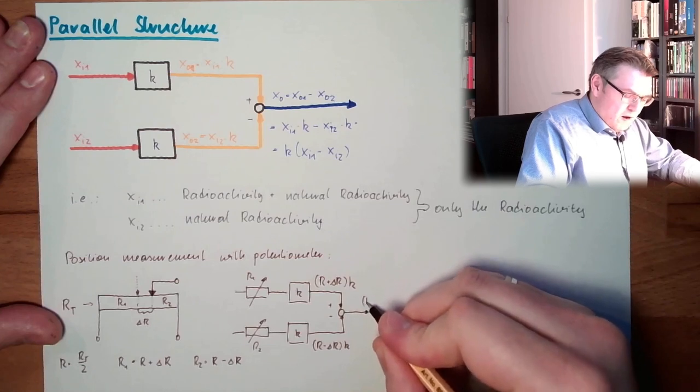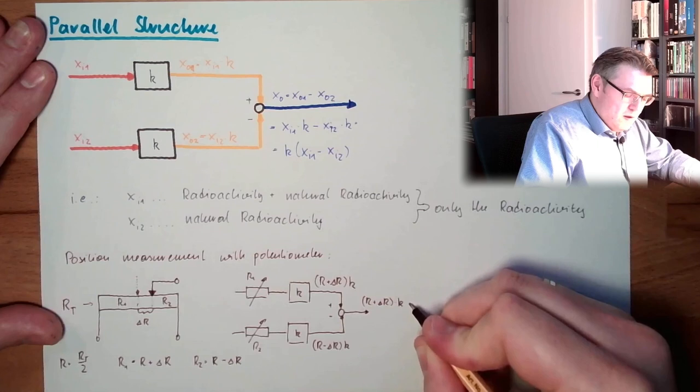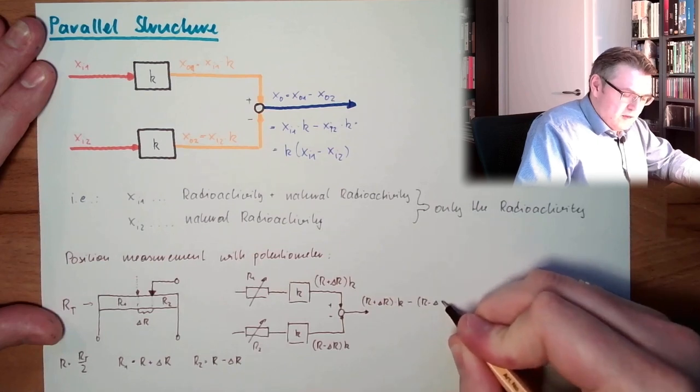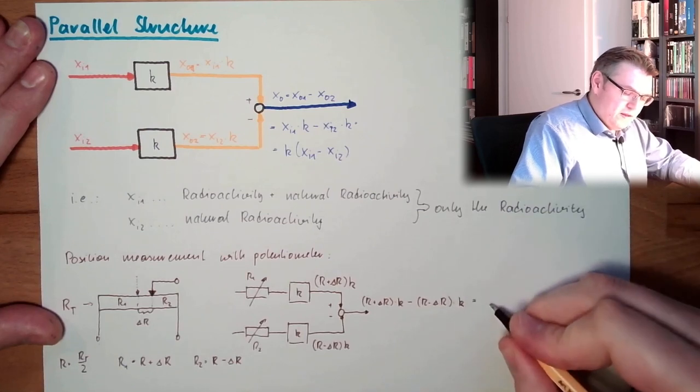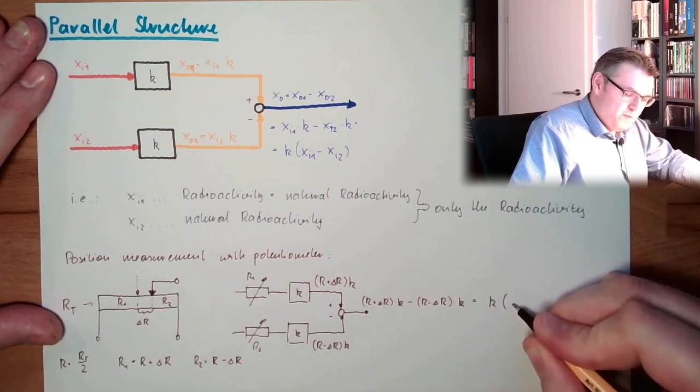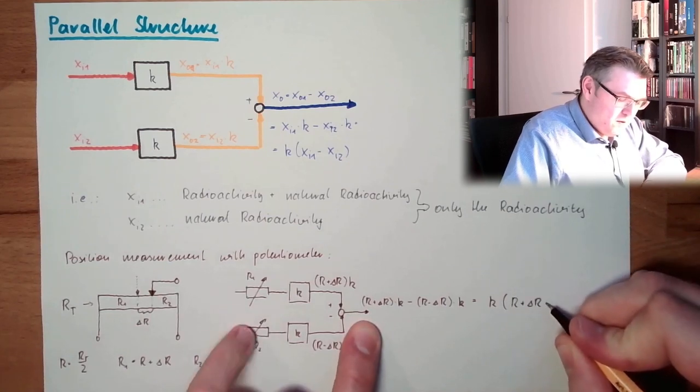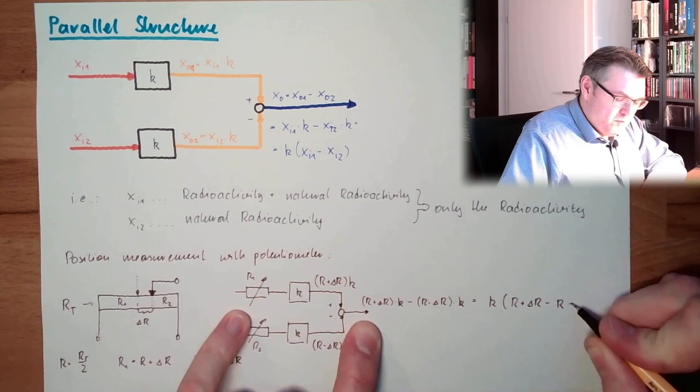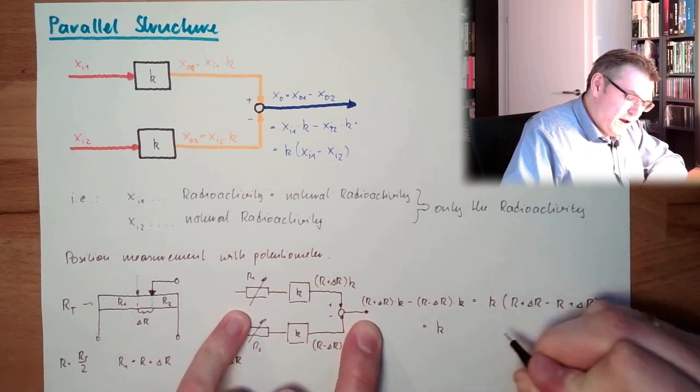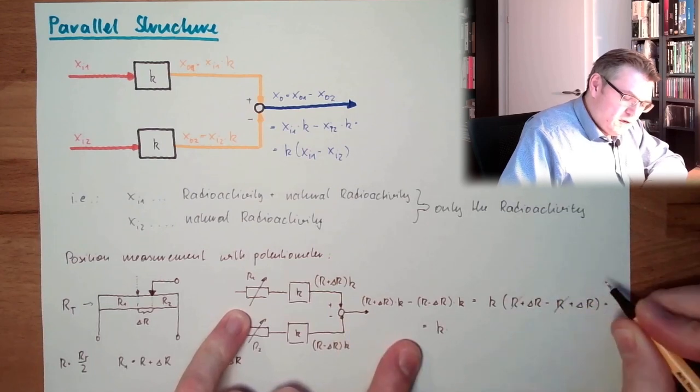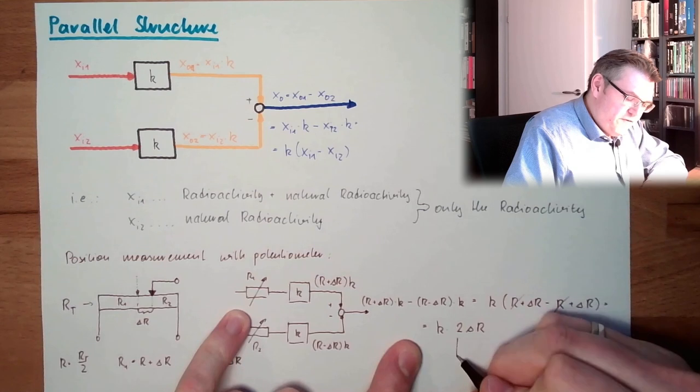Here we have R plus delta R multiplied by k minus R minus delta R multiplied by k. Get k out. K multiplied by R plus delta R minus R plus delta R. So this is k multiplied by R and R is gone. 2 delta R. Factor 2.